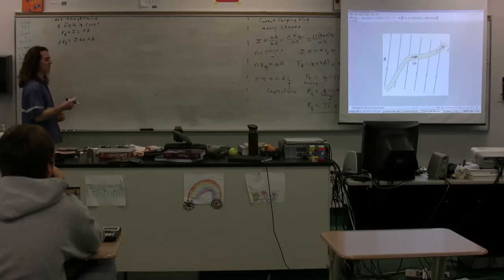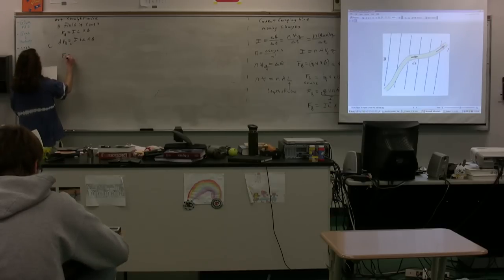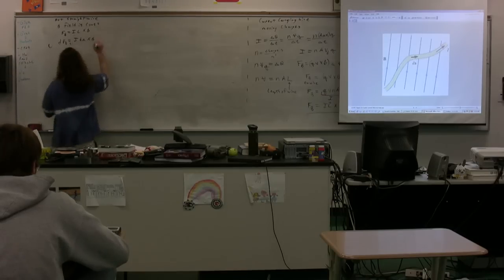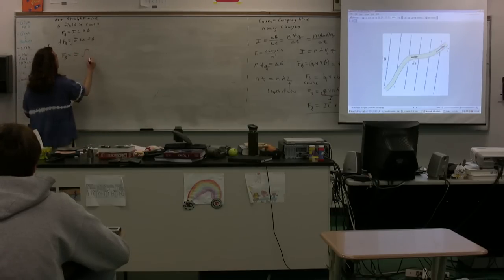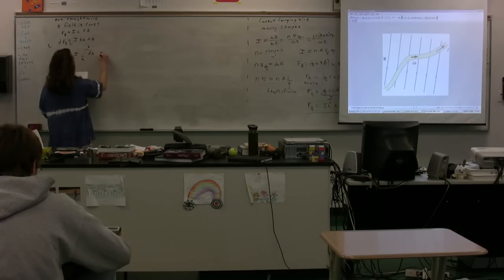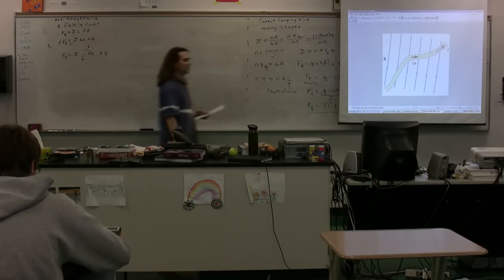We're going to take the integral. If we take the integral of both sides, on the left-hand side we just get the magnetic force. On the right, we're going to assume that the current is constant so the current will come out. We'll have the integral of ds from points A to B, and this is going to be cross product with the magnetic field.